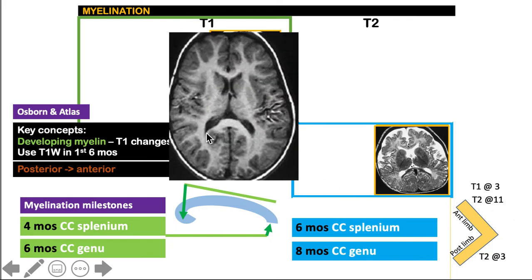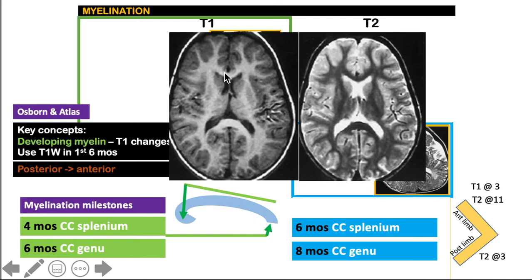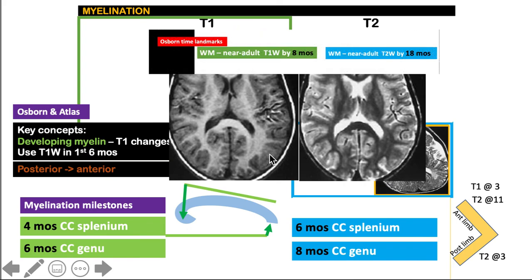In this T1-weighted image example, we see hyper-intense signal in the splenium and anterior portion of the corpus callosum. On the T2-weighted image, those same areas as well as the posterior and anterior limbs of the internal capsule all show hypo-intense signal — so this child is at least eight months from the corpus callosum findings, and at least eleven months from the internal capsule. The subcortical fibers are already myelinated here. Recalling that near-adult T1 appearance is reached by eight months and near-adult T2 by eighteen months, this patient is indeed twenty-four months of age.